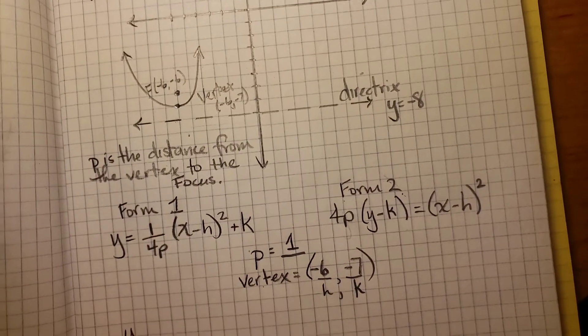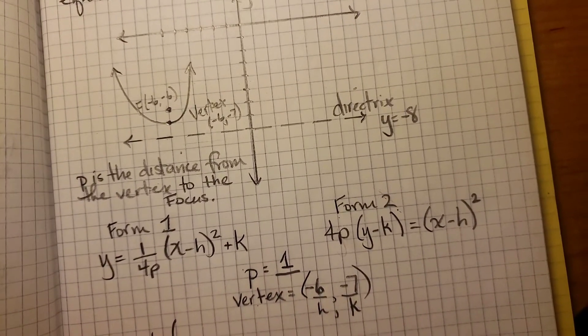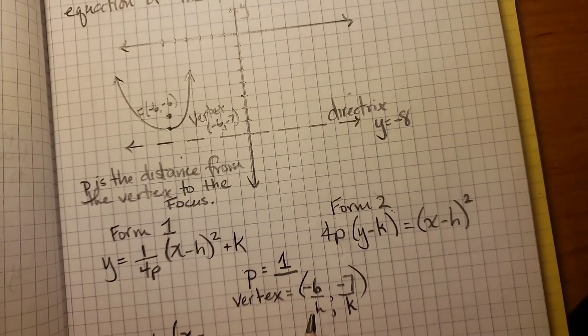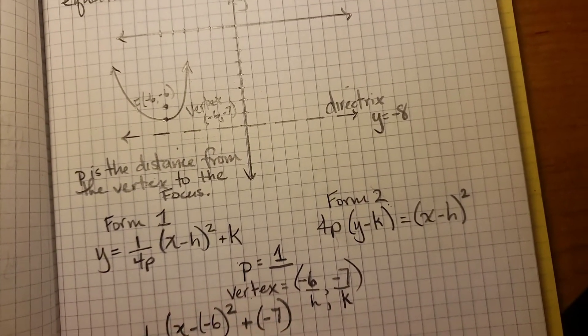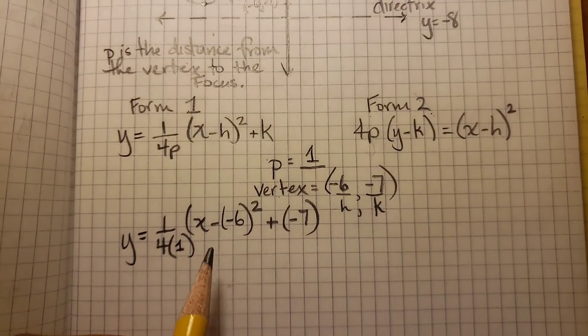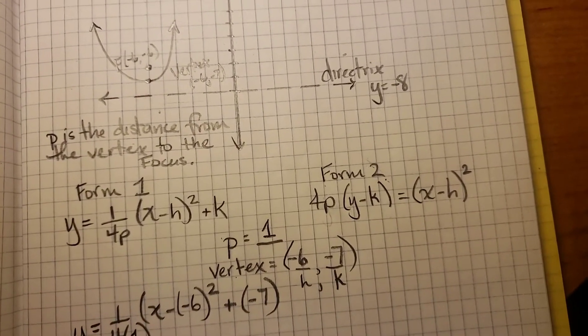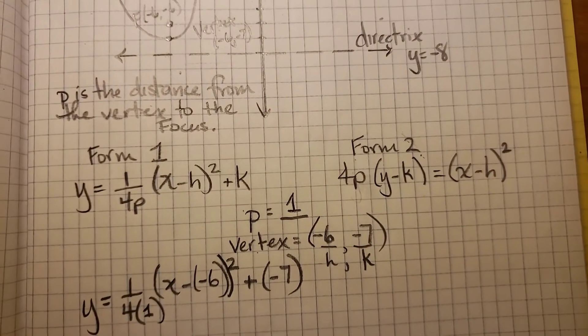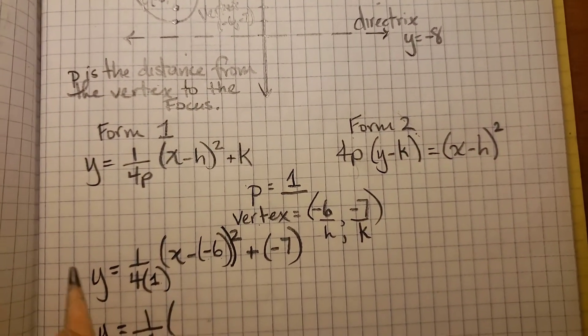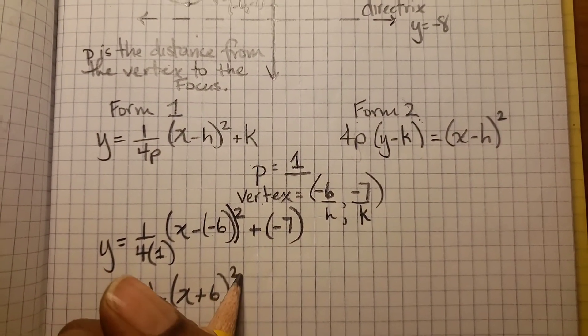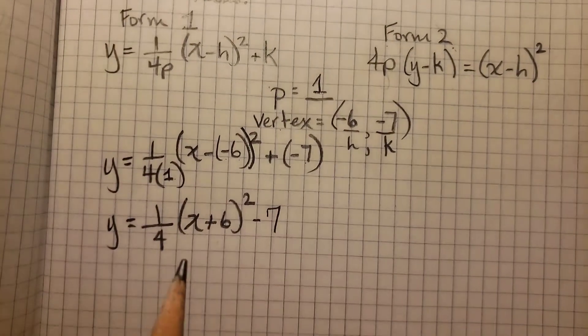So let's do this one. y = 1/(4p)(x - h)² + k. p is 1, h is -6, and k is -7. Always use parentheses when you're substituting - it will make your life a lot easier when simplifying. So we simplify: y = 1/4(x - (-6))² + (-7). That's the same as y = 1/4(x + 6)² - 7. So that's one answer you can enter.